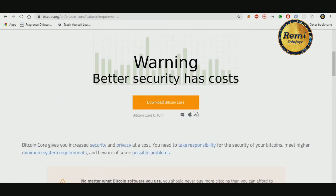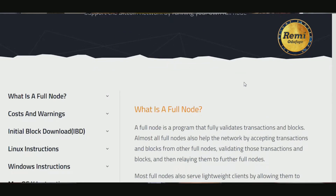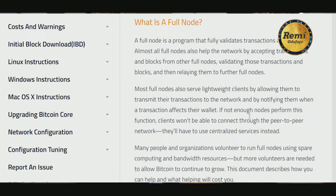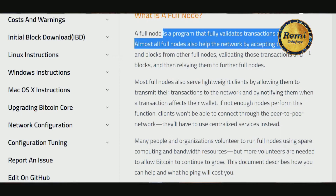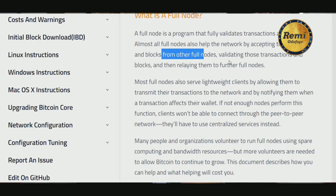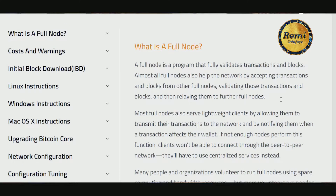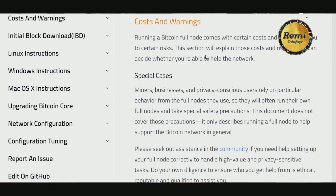Now I'm going to show you my own setup. I have a desktop running here which is now a fully functional Bitcoin node. As you can see, it says 'running the full node,' which means you can support the Bitcoin network by running your own personal node. A full node is a program that fully validates transactions and blocks. Almost all full nodes also help the network by accepting, validating, and relaying transactions and blocks to further full nodes.